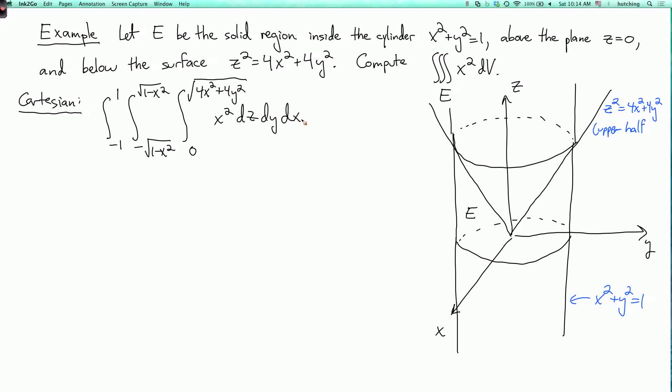So you can do this integral, it will work, but it's got a bunch of square roots and it's sort of not very pretty, so this will be a lot prettier if we use cylindrical coordinates. In cylindrical coordinates, so this bottom surface is z equals 0, as before,